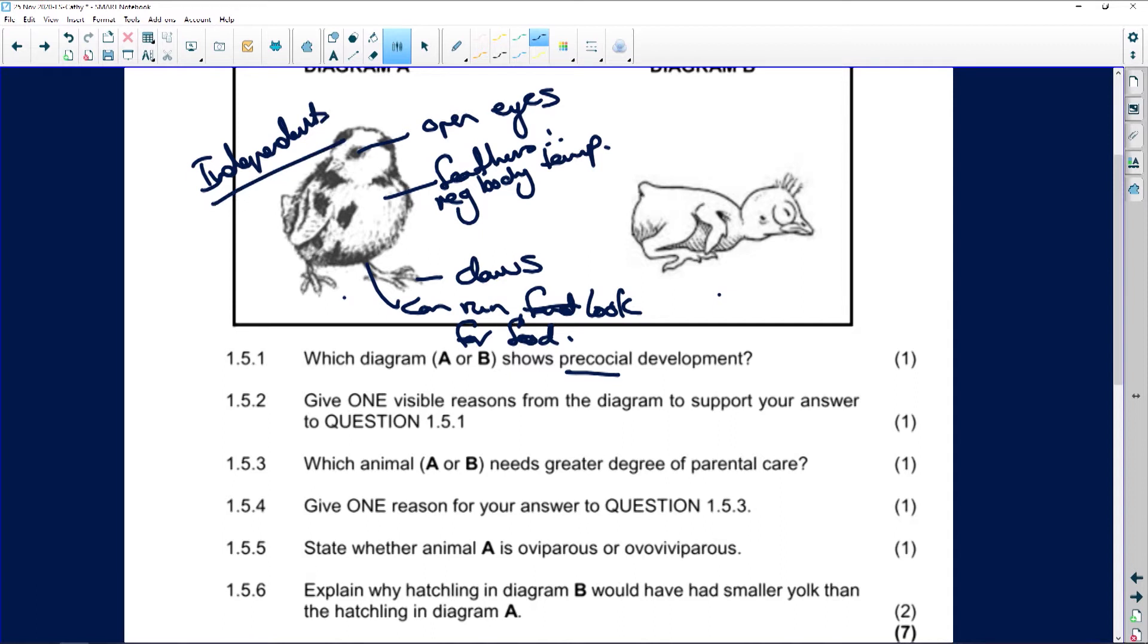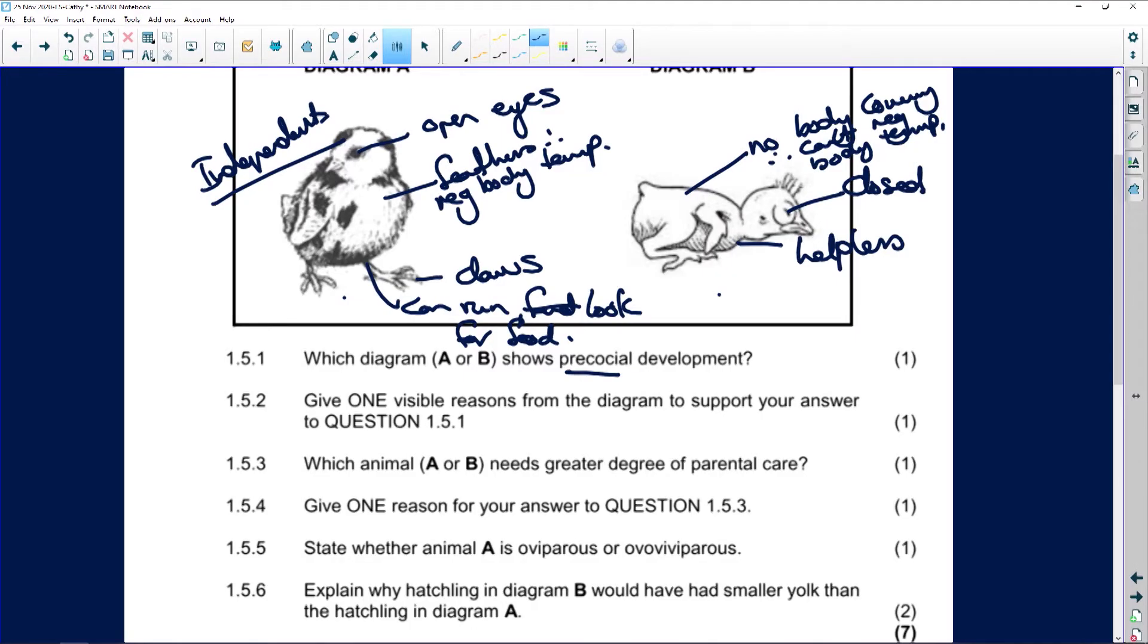Whereas, look at this. Eyes are closed, no body covering. Therefore, can't regulate body temperature. Helpless, can't fend for itself. So just look at that, any one of those would have given you a mark. Which animal A or B needs a greater degree of parental care? I mean, for heaven's sake people, it's going to be B. I mean, that's a mark for nothing. Give a reason for your answer. Because there's no body covering, their eyes are closed, they're helpless, they can't move, they can't fly, they can do nothing.